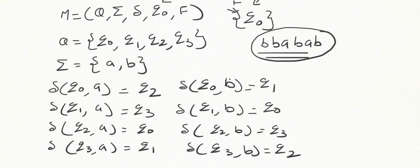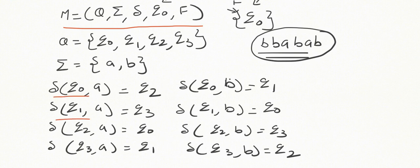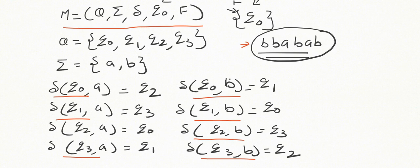Welcome to the next video on FLAT. In the previous video we have seen the block diagram of finite automaton. Analytically, we represented the finite automata with five tuples: M = (Q, Σ, δ, q₀, F). We saw the definition of these individual tuples, how to represent M by transition diagram and transition table, and how to get these five tuples. We also know the condition of acceptance of a string by a given DFA — we have to reach the final state after processing the entire string while starting with the initial state.